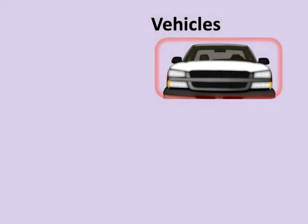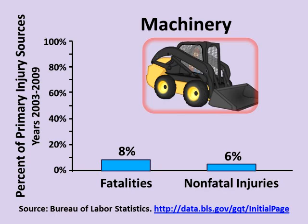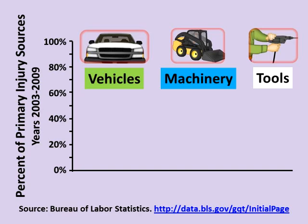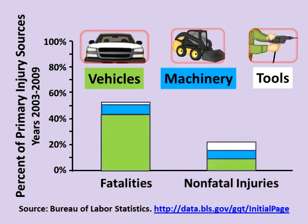Vehicles account for many workplace injuries, including more than 40% of workplace deaths and almost 10% of non-fatal incidents. Machinery accounts for a smaller but still substantial number of deaths and injuries on the job. The same can be said for hand-held tools. Taken together, vehicles, machinery, and tools are involved in 53% of all workplace deaths and 22% of non-fatal injuries. Let's consider some examples of vehicles, machinery, and tools that may be involved in workplace incidents.